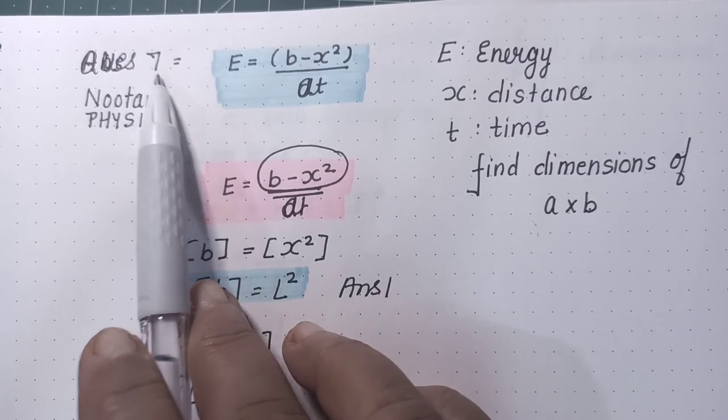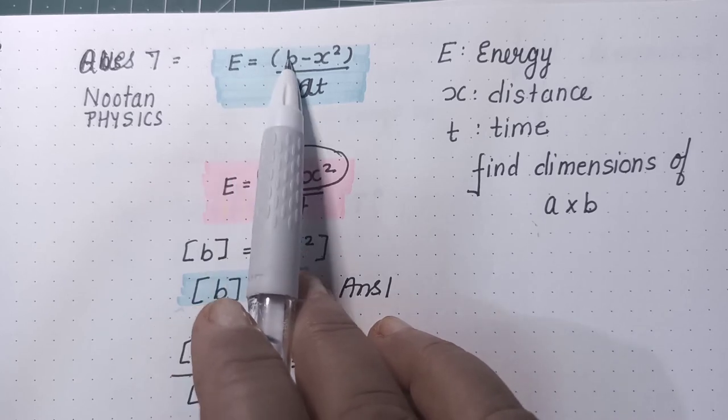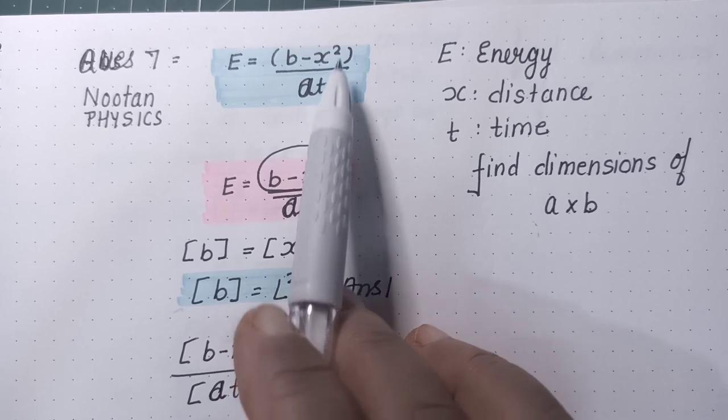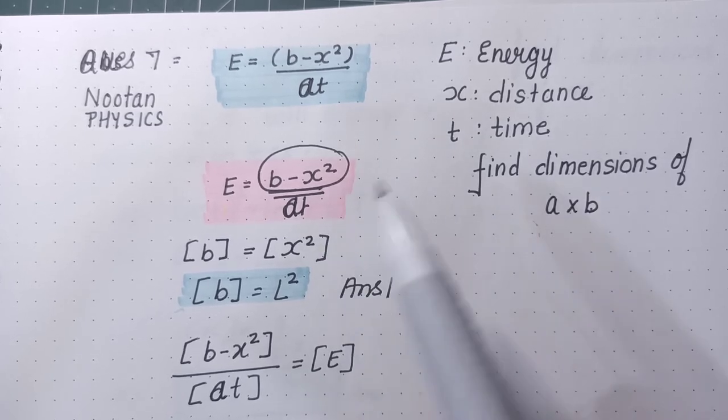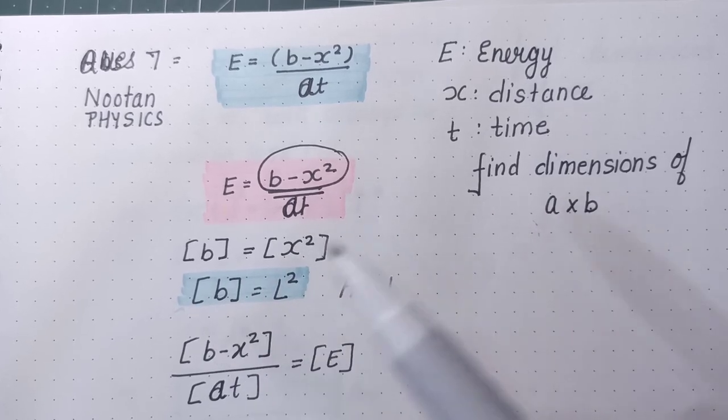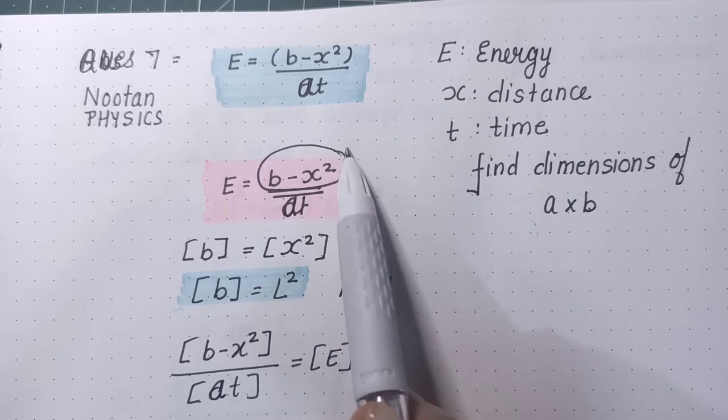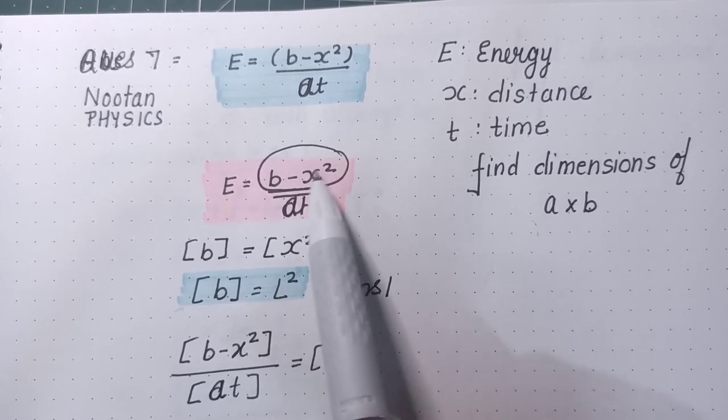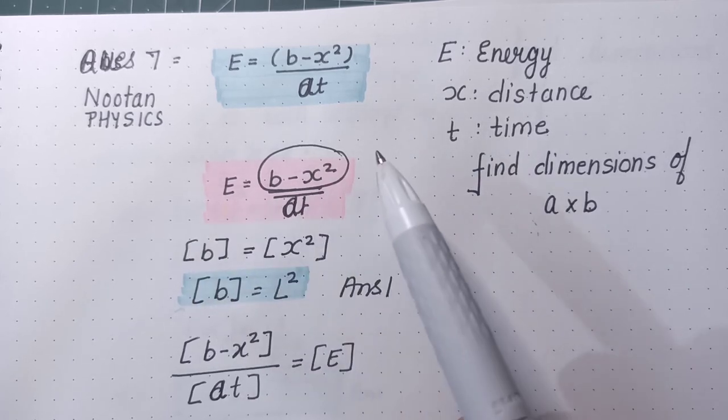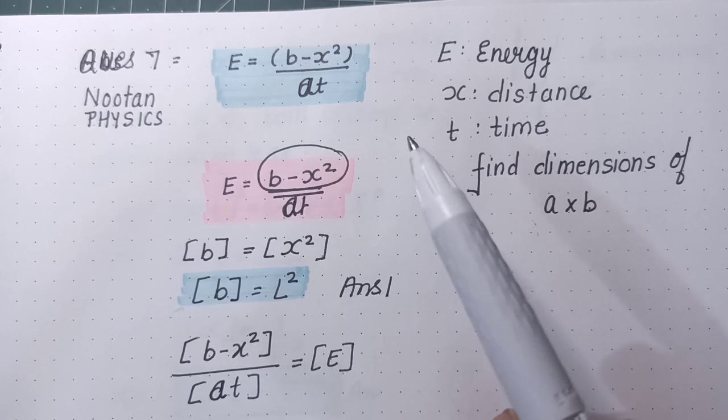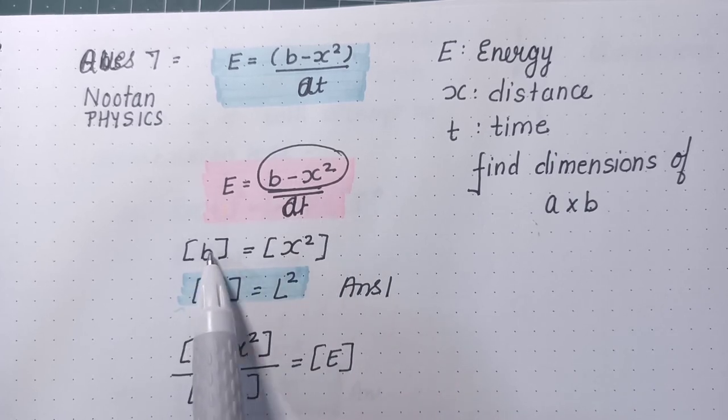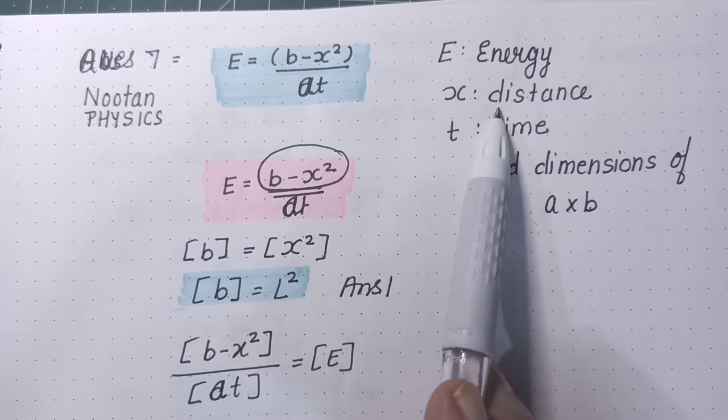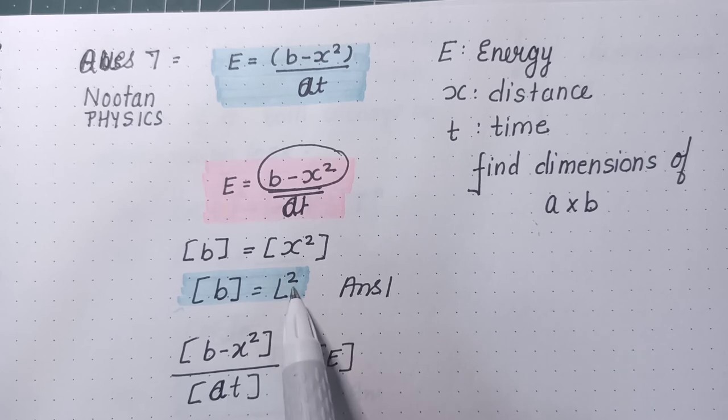Now, this is question number 7. Question number 7 is saying that energy E is equal to B minus X square upon A into T. X is distance and T is time. And then they are saying constant A into constant B ka dimension batao. So first we have to find A and B ka dimension separately. Then we can multiply them. So again we found that part where 2 terms are being subtracted here. So B and X square ka dimension should be same because there is subtraction sign between them. So dimension of B should be same as dimension of X square. Since X is distance, obviously dimension of B is L².